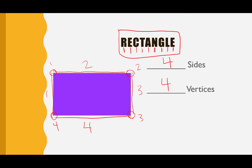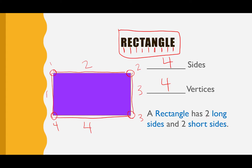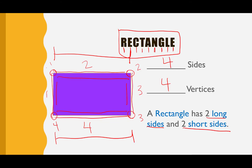There's one special thing about our rectangle, because our square also had four sides and four vertices. So what makes our square different than our rectangle? Well, if you look at our rectangle, it has two long sides and two short sides. So if you want to know the difference between a square and a rectangle, remember: a rectangle has two long sides and two short sides, and a square has all sides the same.